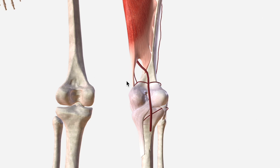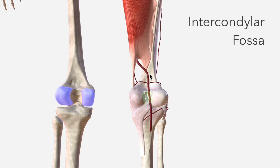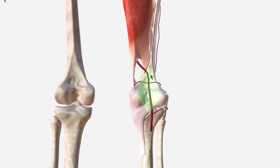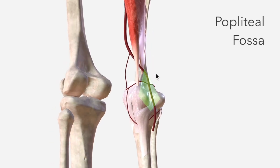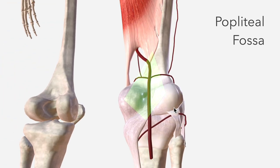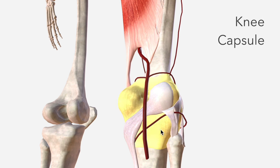The popliteal then moves inferolaterally to lie between the two femoral condyles — this space we call the intercondylar fossa. We also refer to this diamond-shaped area as the popliteal fossa, the borders of which are made up by nearby muscles. You can see the popliteal artery passes pretty close to the knee capsule, which is this fibrous enclosure for the knee joint just here.